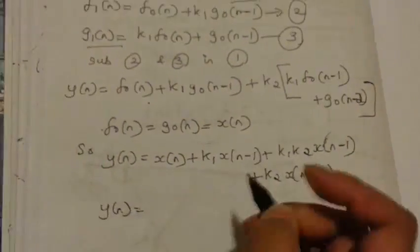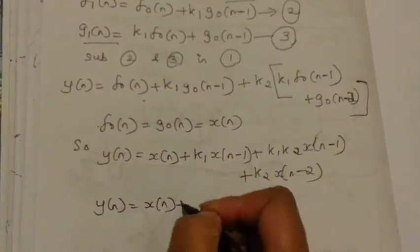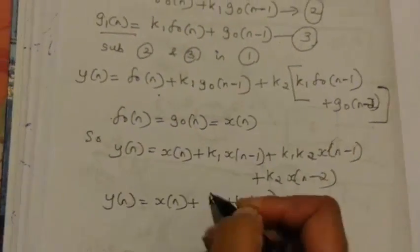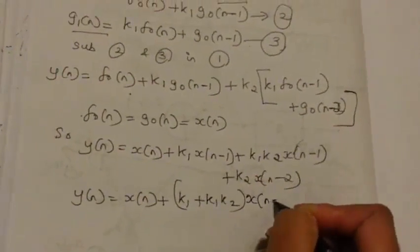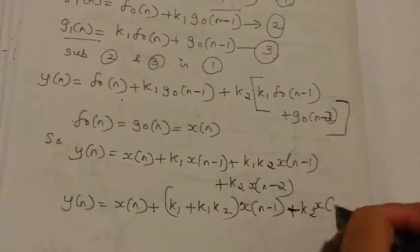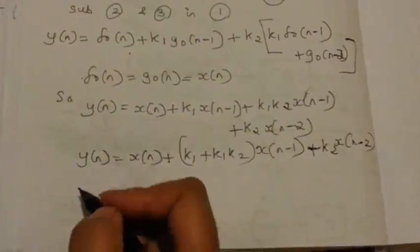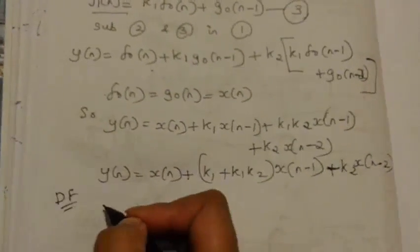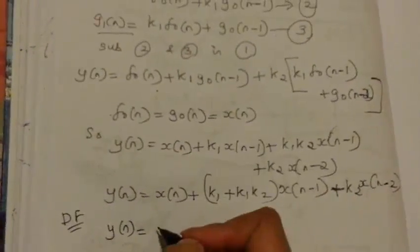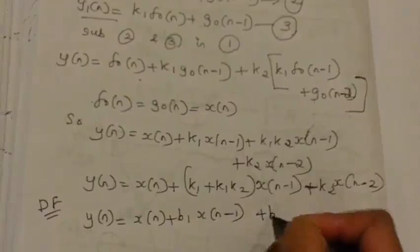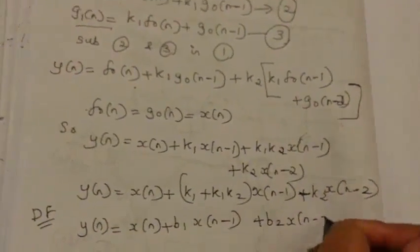Clubbing everything together, Y of N equals X of N plus (K1 plus K1 K2) times X of N minus 1, plus K2 times X of N minus 2. Now we have to write the expression for direct form. We already know the direct form coefficients, so by equating both we can find the values of K1 and K2 — the reflection coefficients. Once reflection coefficients are obtained, we can realize the FIR filter in lattice form.